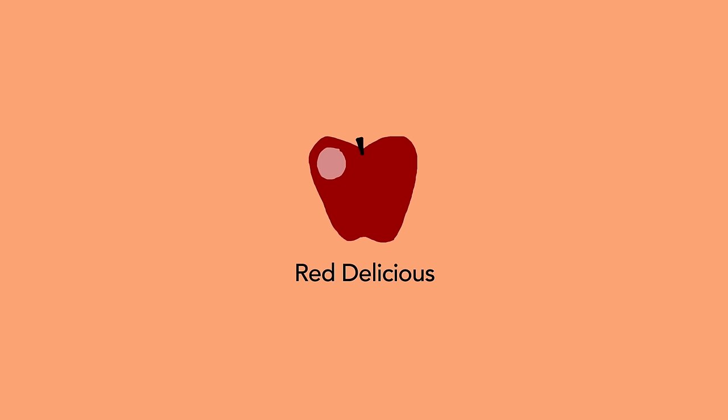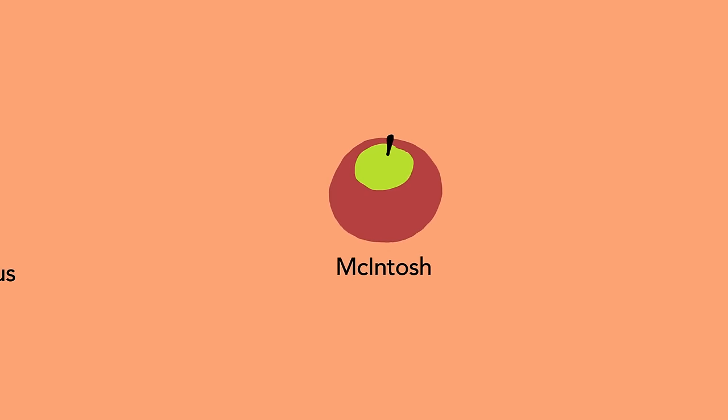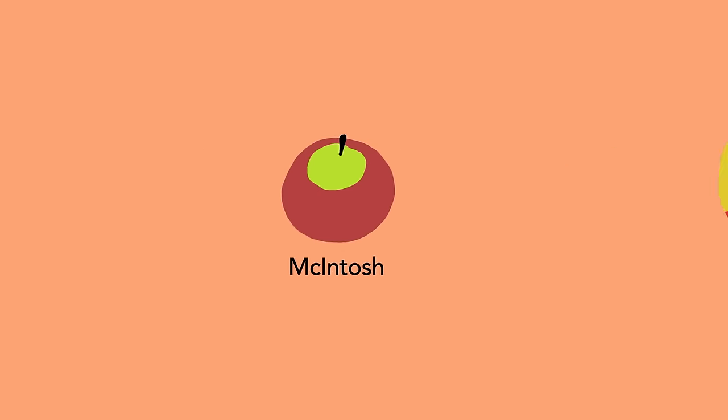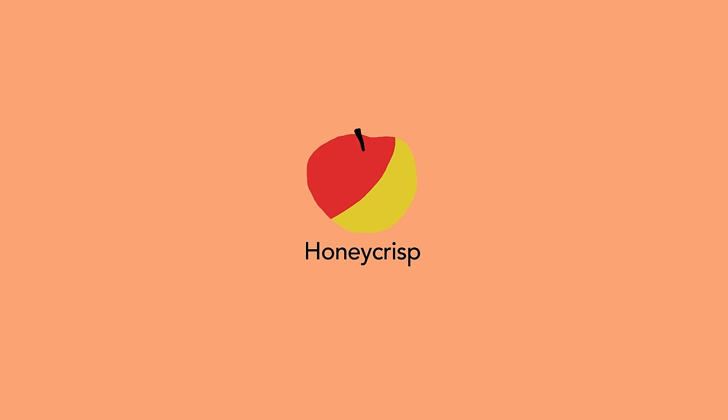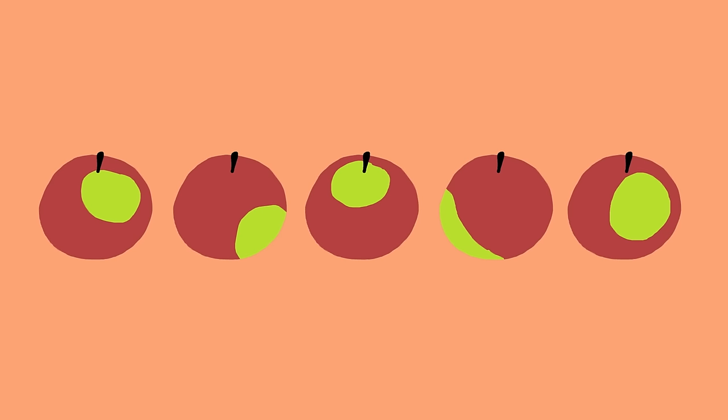Red Delicious is different from Macintosh, is different from Gala, is different from Honeycrisp. Even when describing one type, there might be variations from apple to apple. Same thing goes for sound sources.